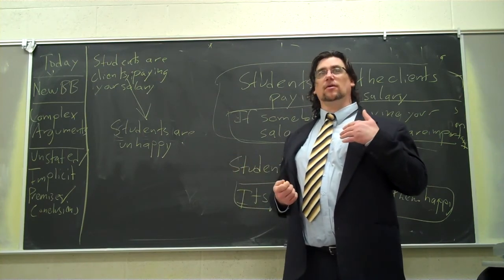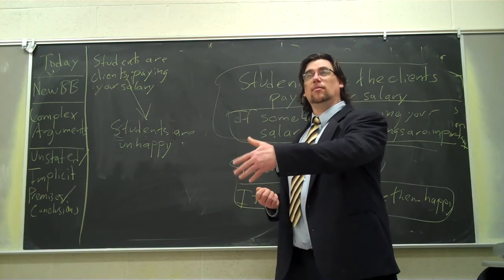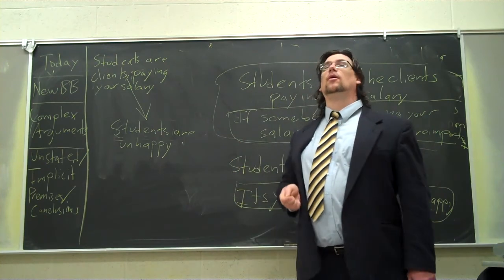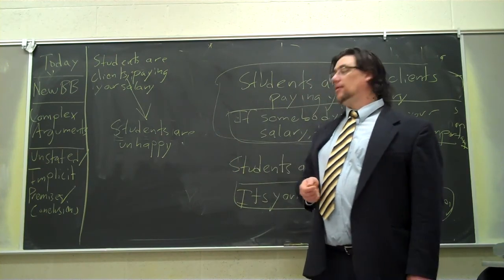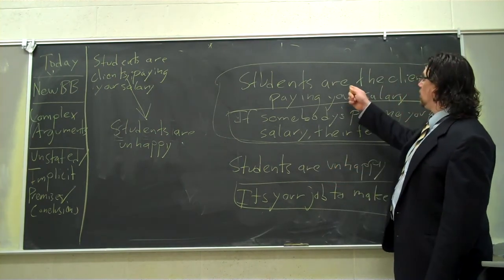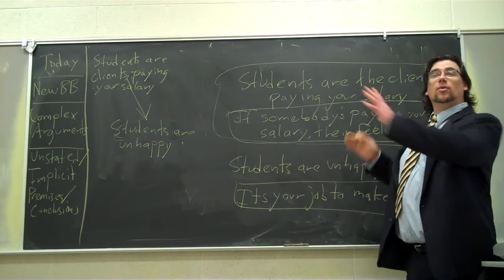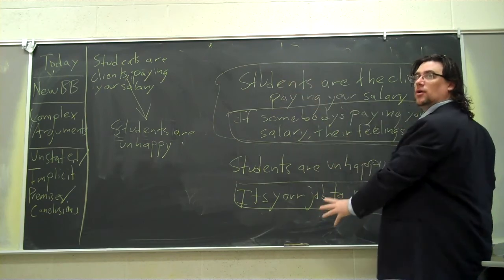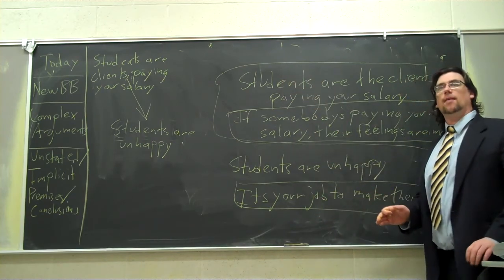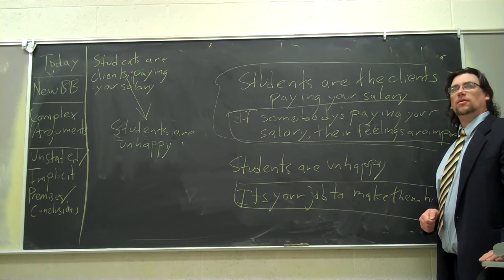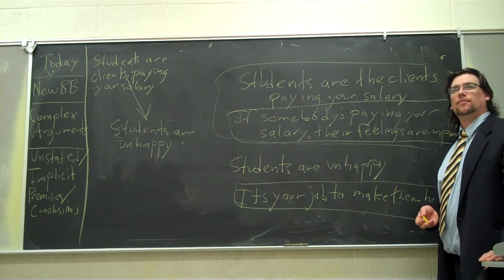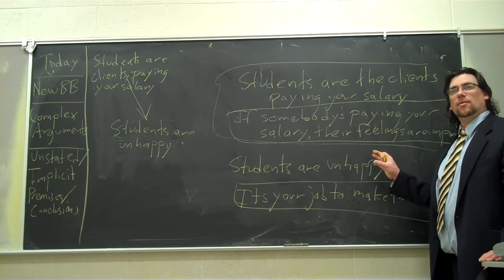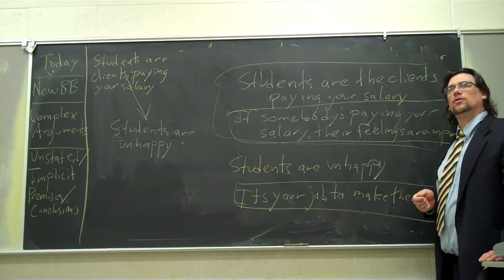So students are the clients paying their salaries, now is that the conclusion? No. That's one of the premises. Generally when we're sketching these things, the convention is premises on top, conclusion at the bottom. This is the real conclusion. It's your job to care about what your clients think. I said that this, students are unhappy, if we think about it, is really functioning as a premise, not as a conclusion. Now when you argue, when you make real life arguments, you're assuming things on the part of your listeners all the time.